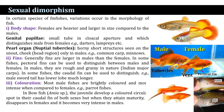Coloration: most male fishes are brightly colored and are easily distinguished from females. In the case of parrot fish it is easily observed. In bowfin, juveniles develop a colored circular spot on their caudal fin in both sexes, but when they attain maturity, it disappears in females and becomes prominent in males.